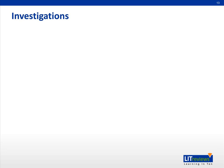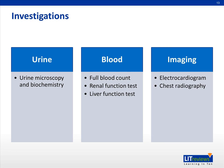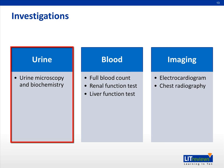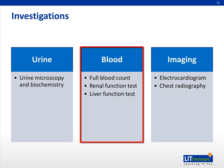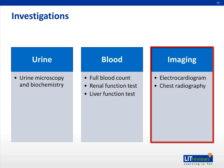Investigations of edema will depend on the differential diagnosis suspected after history taking and physical examination. The common tests can be broadly divided into urinary, blood, and imaging tests. Urinary tests include urine microscopy and biochemistry looking for proteinuria and hematuria. Blood tests consist of full blood count such as anemia of chronic disease, raised white cell count in sepsis, renal function such as raised urea and creatinine level in renal failure, and liver function tests such as hypoalbuminemia and raised liver enzymes in liver failure. Imaging may include electrocardiogram and chest radiography, such as cardiomegaly and pulmonary plethora in cardiac failure.